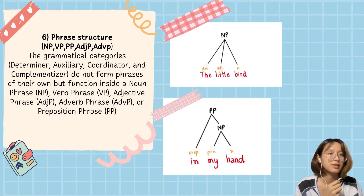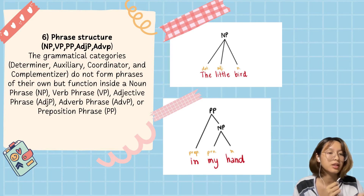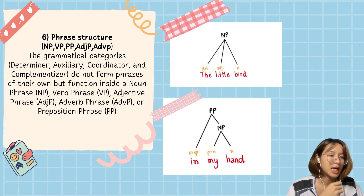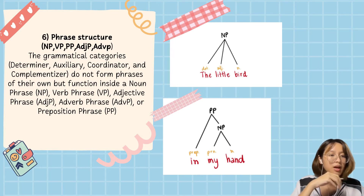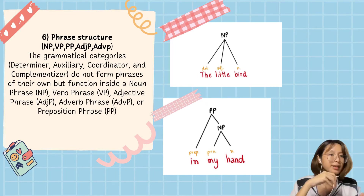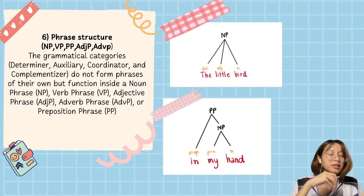For example, 'the little bird': 'the' is a determiner, 'little' is an adjective, 'bird' is a noun — so this phrase structure is a noun phrase. Example two: 'in my hand' — 'in' is a preposition, 'my' is a pronoun, 'hand' is a noun. 'My hand' is a noun phrase, and 'in my hand' is a prepositional phrase.